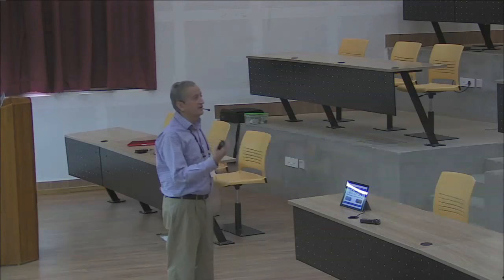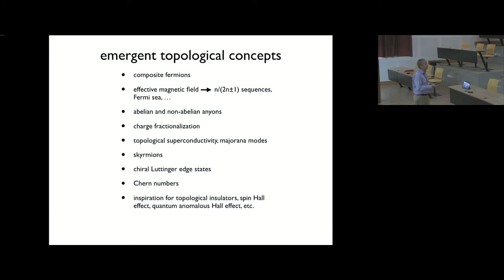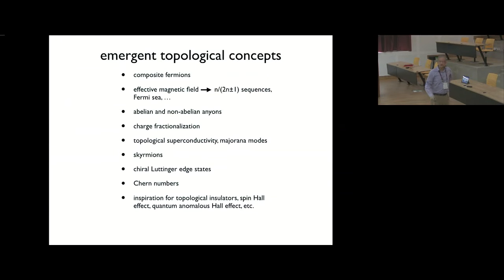The emergent particles are composite fermions — topological particles because they have vortices bound to them, and vortices are topological objects. The vortices produce an effective magnetic field which also has a topological origin. In Fractional Hall Effect we have also encountered abelian and non-abelian anyons, fractalization of charge, and topological superconductivity and Majorana modes also made their appearance first in the field of Fractional Hall Effect. There are topological spin structures called skyrmions, chiral edge states, and FQHE served as an inspiration for topological insulators, spin Hall effect, and quantum anomalous Hall effect.